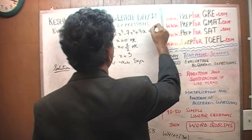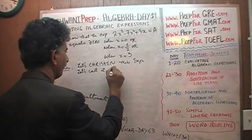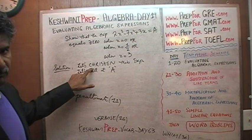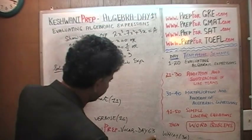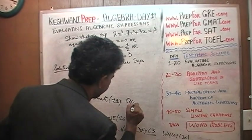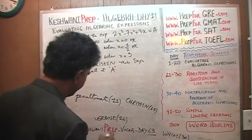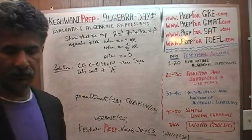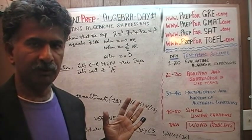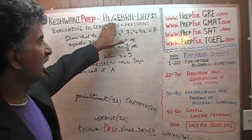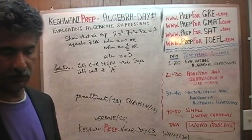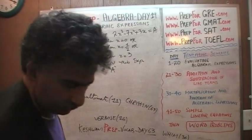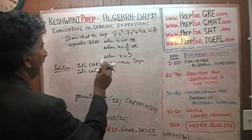Let's call it expression A. The word I just used was 'christen,' which means to name something, to give something a name. You'll find it on day number 63 — just type in 'Keswani-prep-vocab-day-63.' I also have videos on geometry and vocabulary. So let's christen it — we call it A. Now that we have the name for it, we can work on it.